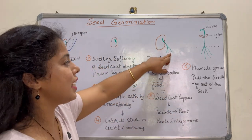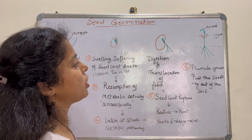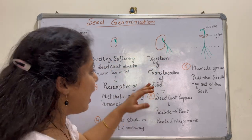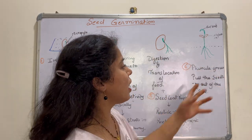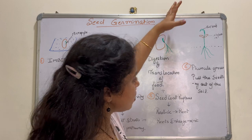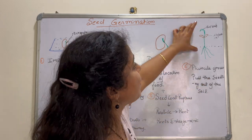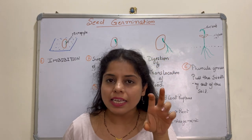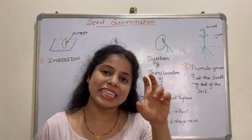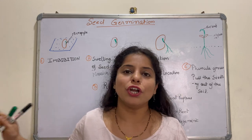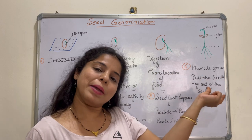It will absorb more and more nutrition. Ultimately, eventually, the plumule grows. The plumule grows and pulls the seedling outside. And finally, you get a tiny baby plant. This baby plant is called a seedling. So this is the journey of seed germination — from a tiny seed to a baby plant.